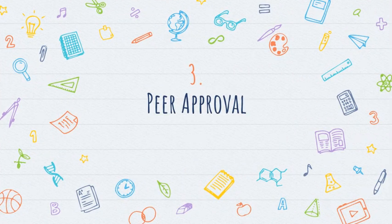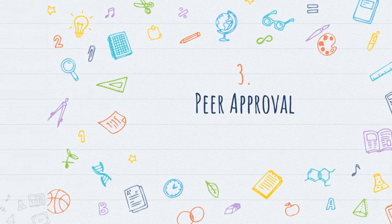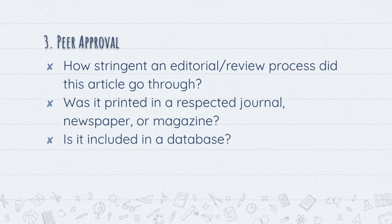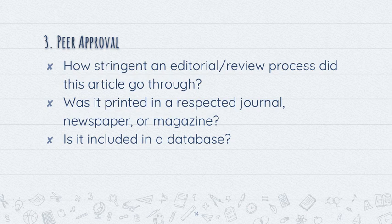Next, we'll talk about peer approval. Questions we ask are: how stringent an editorial or review process did this article go through? Was it printed in a respected journal, newspaper, or magazine? And is it included in a database? In other words, in one question: do other experts approve of what is written in this article?